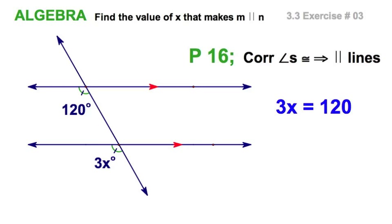Again, postulate 16: corresponding angles are congruent, the lines are parallel. That means I set these two expressions equal to each other and then just solve for x and I'm done.